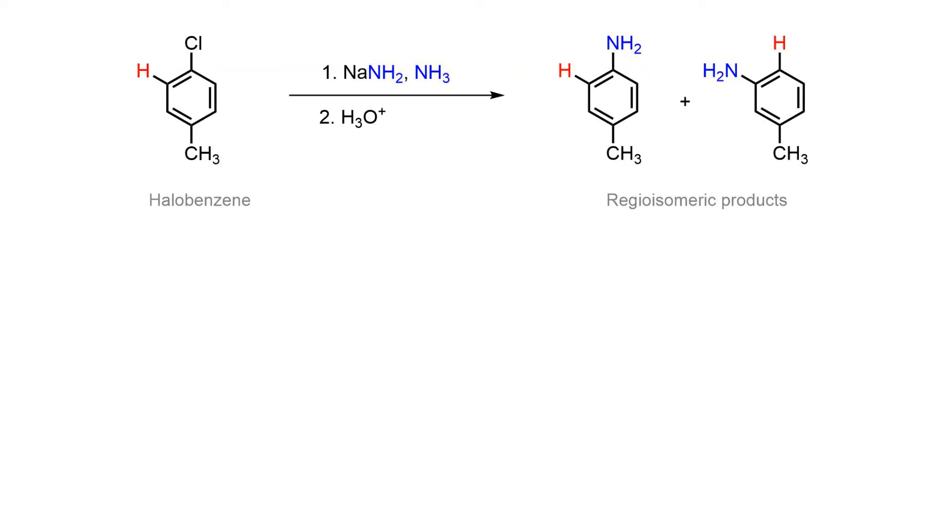The reaction between a halobenzene and a very powerful base results in substitution products with the mechanism being known to go through a highly strained alkyne intermediate known as benzyne.